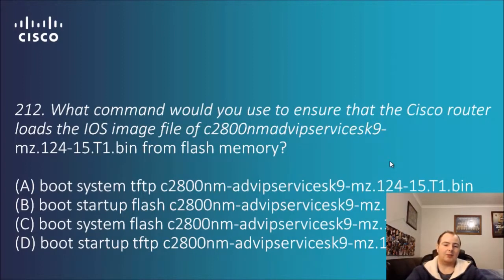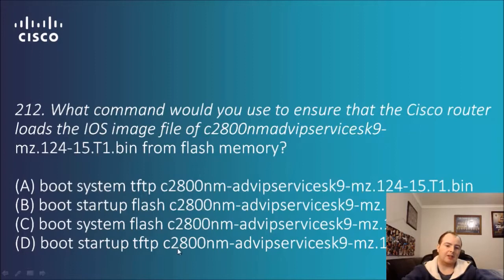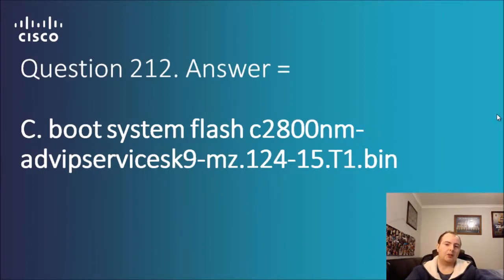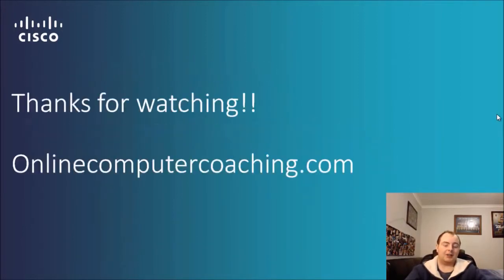Question 212: what command would you use to ensure that the Cisco router loads the IOS image file c2800nm-advipservicesk9-mz.124-15.T1.bin from flash memory? Options include variations of 'boot system' and 'boot startup'. You want it to load from flash memory, so it's not a TFTP option — it will be B or C. The command is 'boot system', so with 'boot system flash' and the filename, C is the answer.